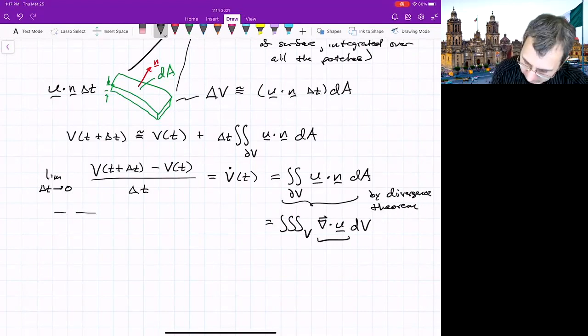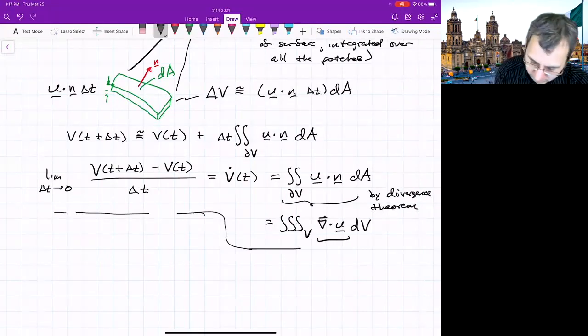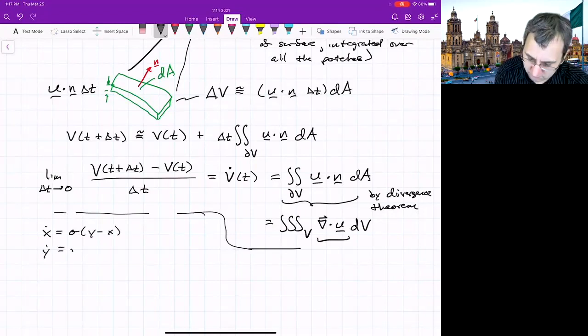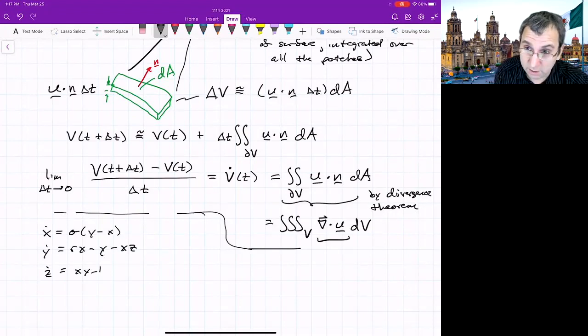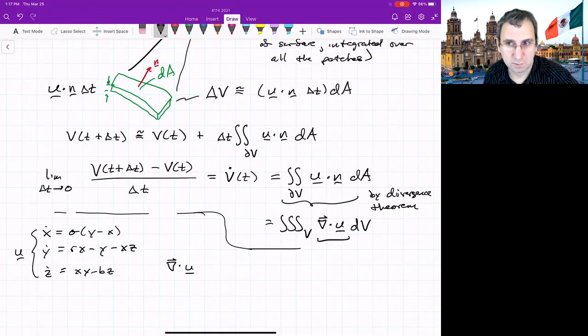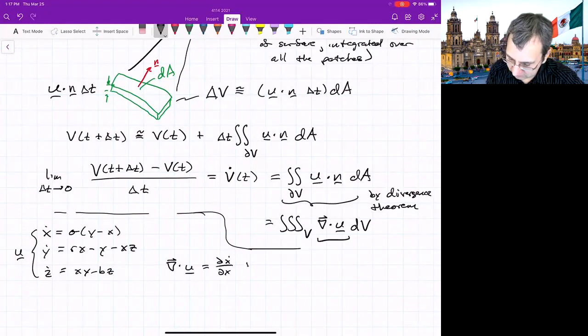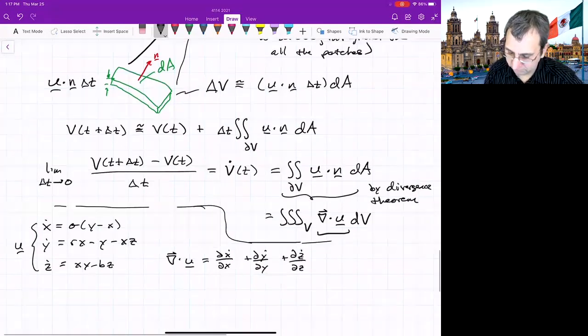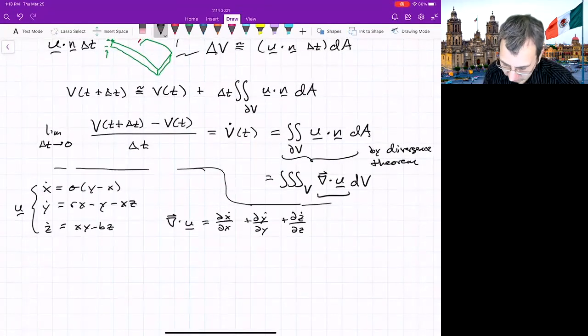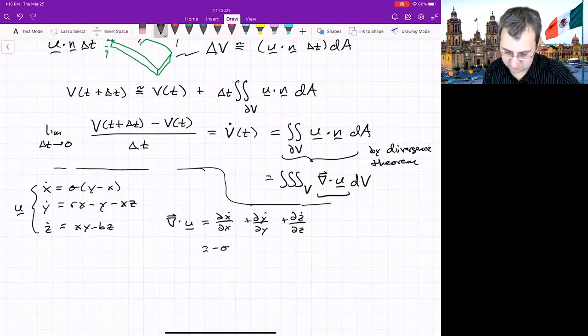What do we do? Let me just repeat the Lorenz equations and then take the divergence of them. All right, x dot equals sigma y minus x, y dot equals rx minus y minus xz, z dot equals xy minus bz. And the divergence of that fluid flow, right? This is, that's the flow vector. We could write this as partial x dot partial x plus partial y dot partial y plus partial z dot partial z. And then just calculate it out.